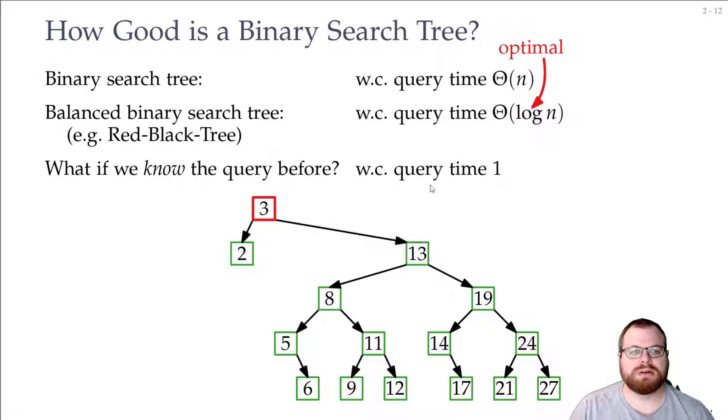So if I look for something that I don't know of, then I can do it in logarithmic time, I cannot do better. If I know what it is, then I can do it in constant time.